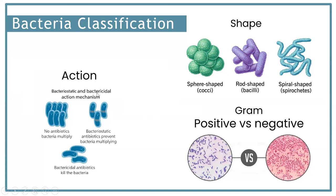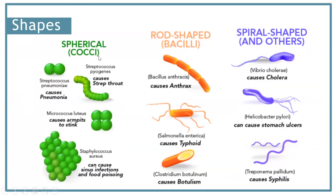There are generally three shapes of bacteria. We have the spherical ones. Some examples are Streptococcus pneumoniae, which causes pneumonia; Streptococcus pyogenes, which causes strep throat; Micrococcus luteus, which causes body odor; and Staphylococcus aureus, which can cause sinus infections and food poisoning.